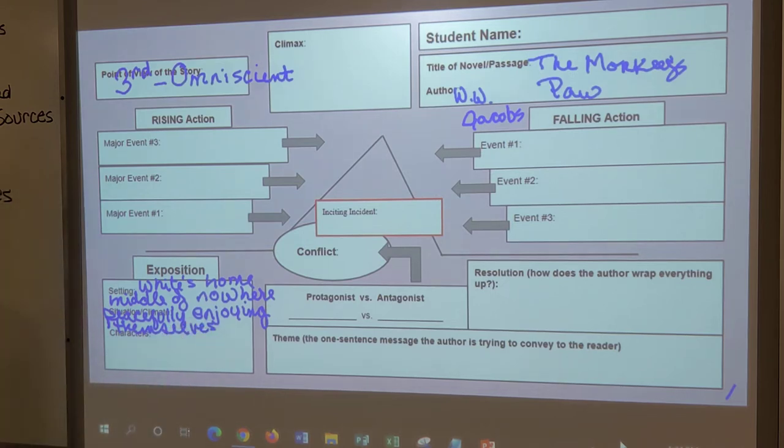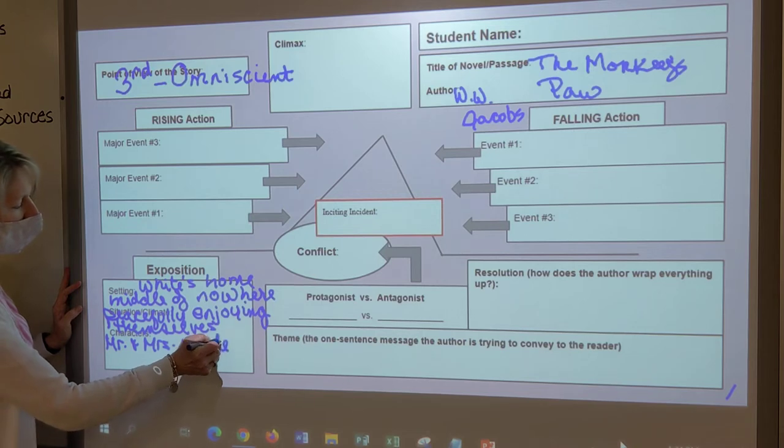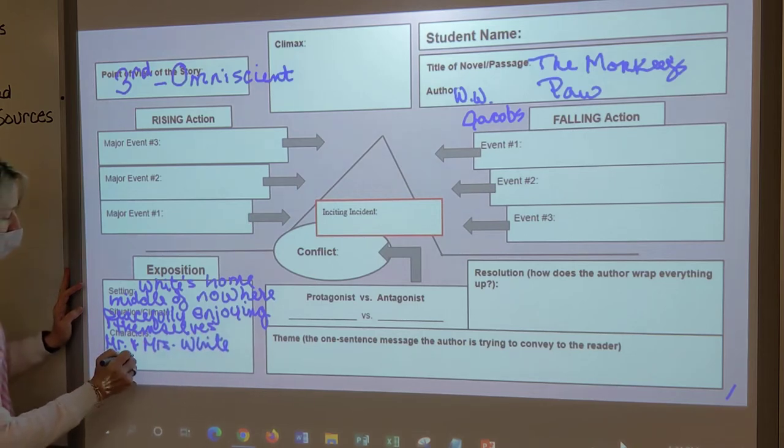And by the way, kids, this has to be all filled out. I'm collecting it, and you will be graded. The other day when I wasn't here and you had to find the examples of symbolism, I'm not sure what some of you were doing. What about characters? Who do we see right in the beginning? Liam? Mrs. White, Mr. White, and Herbert. Mr. and Mrs. White and Herbert, right?